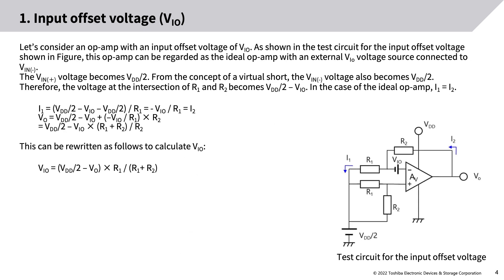Consider an op-amp with an input offset voltage VIO as shown in the test circuit. This op-amp can be regarded as an ideal op-amp with an external VIO voltage source connected to VIN−. The VIN+ voltage becomes VDD/2, and from the concept of a virtual short, VIN− also becomes VDD/2. Therefore, the voltage at the intersection of R1 and R2 becomes VDD/2 minus VIO. In the ideal op-amp case, I1 equals I2, and this can be rewritten to calculate VIO.